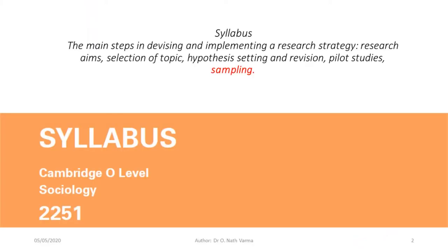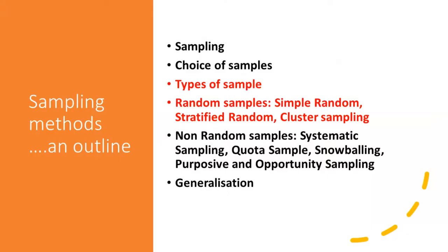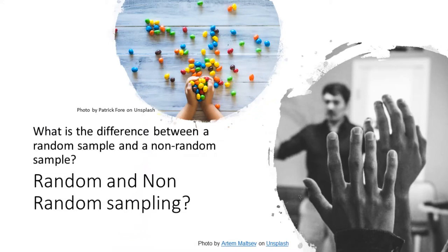Hello dear students, we are back again with another lesson on sampling. You will recall that in the first lesson we looked at the basic concepts you should understand in sampling. Today we will look at different types of sampling. We will start with random sampling: simple random, stratified random, and cluster sampling. We should be able to make a distinction between random and non-random sampling. In this lesson we will consider only random sampling. The next lesson will be about non-random sampling.